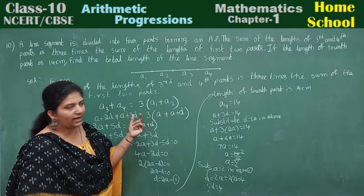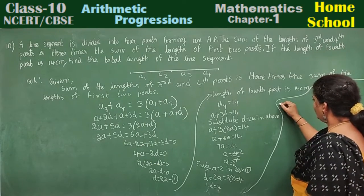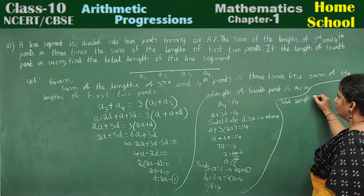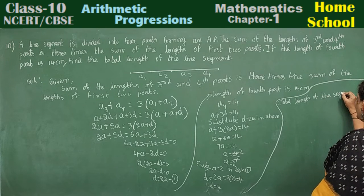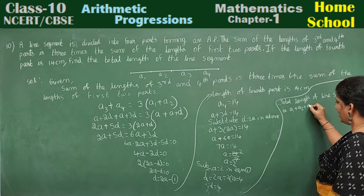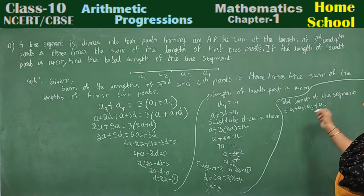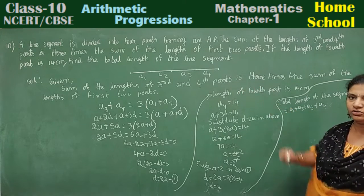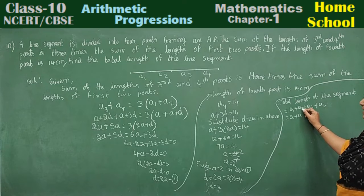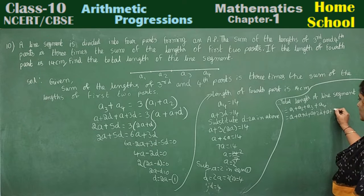What we need to calculate: find the total length of the line segment. Total length equals a1 plus a2 plus a3 plus a4. We need to add all four lengths. Writing in general form: a1 is a, a2 is a plus d, a3 is a plus 2d, a4 is a plus 3d.